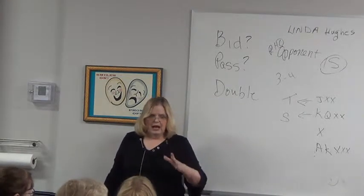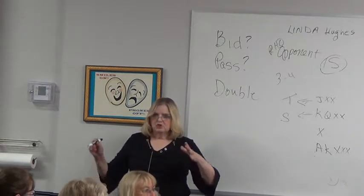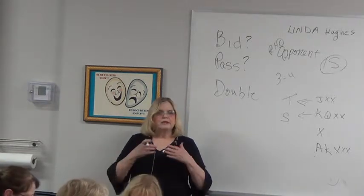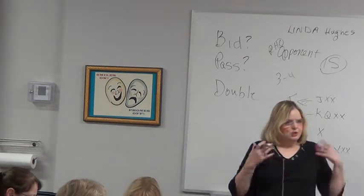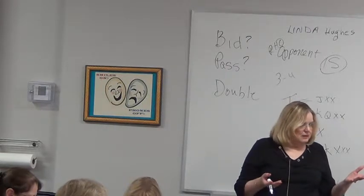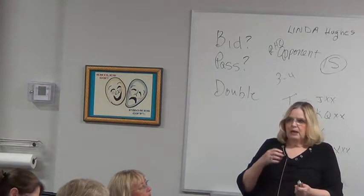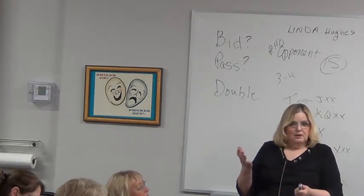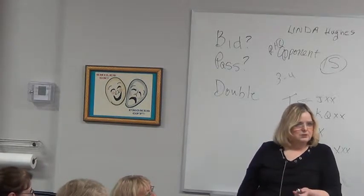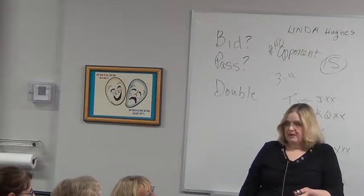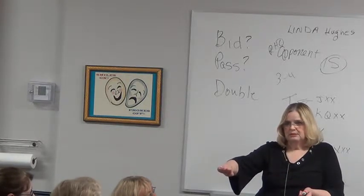So if I have a no trump hand in high card points and a stopper in their suit, I can overcall a no trump. Any time you bid no trump, you've told your partner so much about your shape and your strength. That's the advantage of bidding a no trump. So if I do that with one or both four card majors, partner is still at liberty to bid two clubs and let me bid my four card major, because our systems are on.